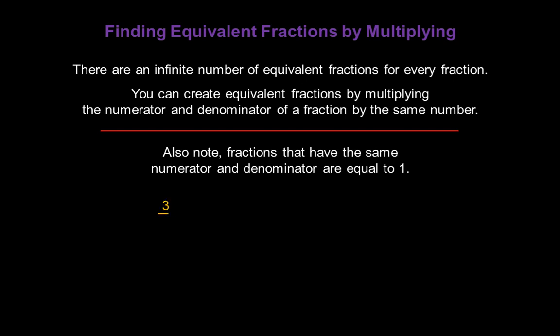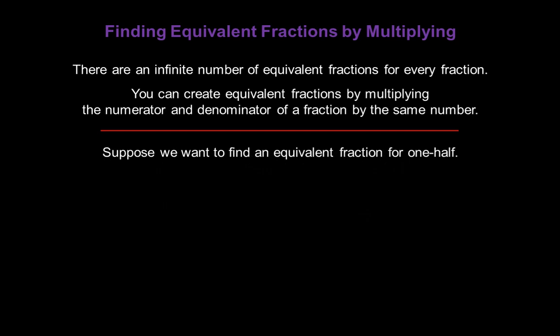So three over three, or three divided by three, is equal to one. Seventeen over seventeen is equal to one. One hundred over one hundred is equal to one, and so on. Any number divided by itself gives me one.